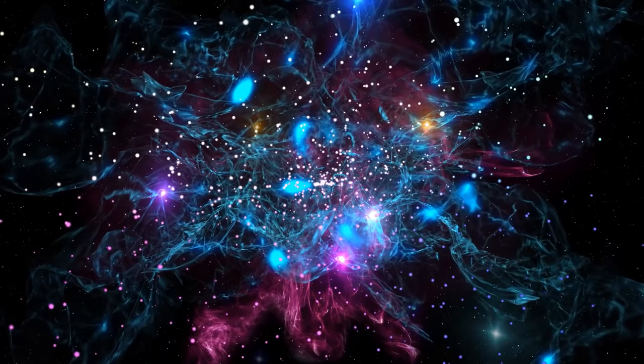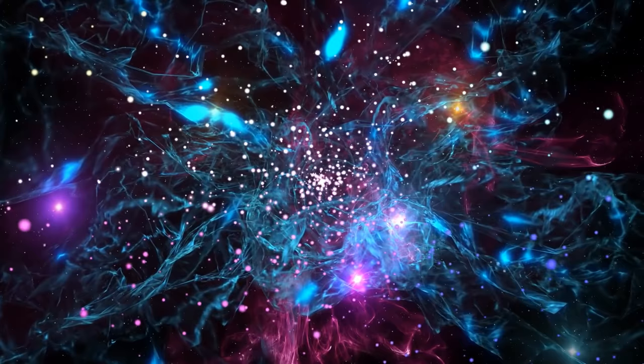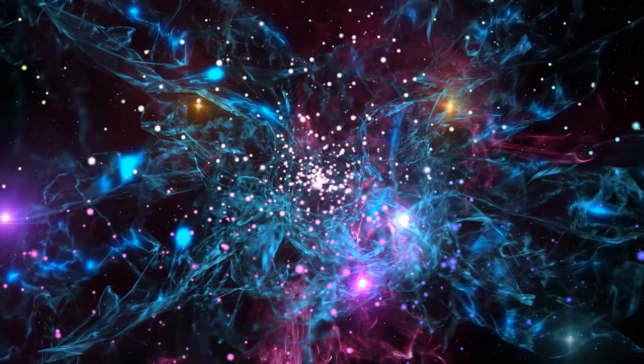The big cities of the Local Group are our home galaxy, the Milky Way, and the Andromeda galaxy, M31. Each is a disk that's at least 100,000 light-years wide and contains hundreds of billions of stars. After these two behemoths,